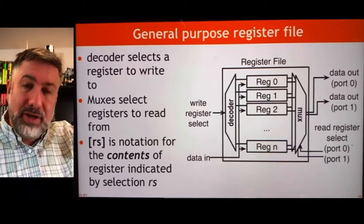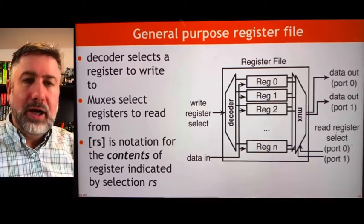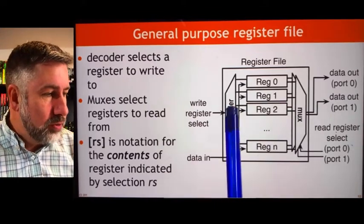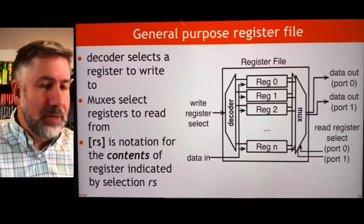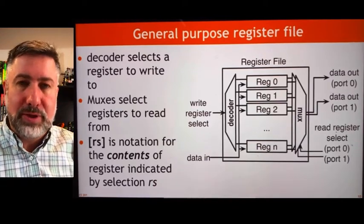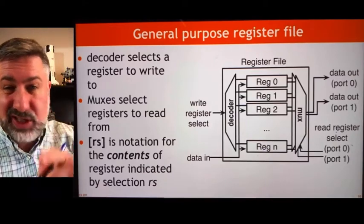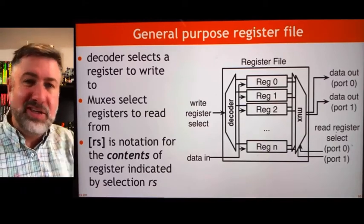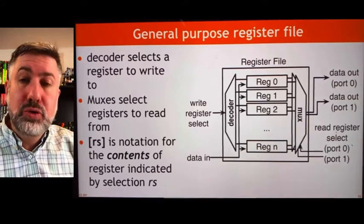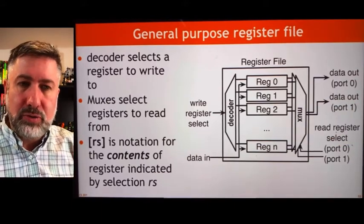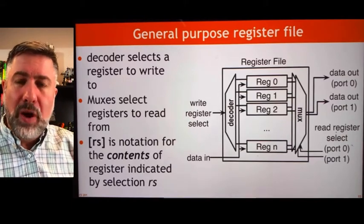The result from the ALU is going to come back and be presented to the register file. We're going to use a decoder to choose which of the registers to write to. That data is going to be presented to all of the registers, and then the decoder says 'register six, you store that information — everybody else ignore it.' So we've got multiplexers on one end that choose which registers we use as inputs to the ALU, and a decoder that chooses where to put the result.